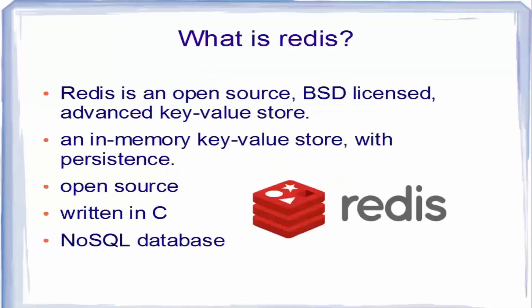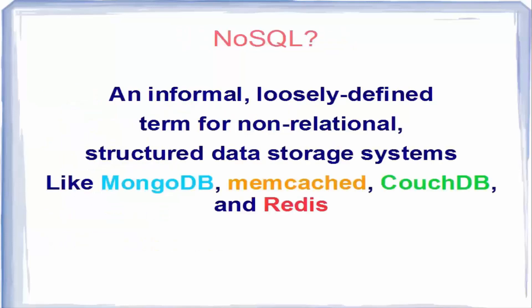Redis is an open source BSD-licensed advanced in-memory key-value store where keys can contain data structures such as strings, hashes, lists, sets, and sorted sets. It's an in-memory key-value store with persistence, which means Redis can be used as a database, a caching layer, or a message broker. It is written in C and is a NoSQL database. NoSQL is an informal, loosely defined term for non-relational structured data storage systems.